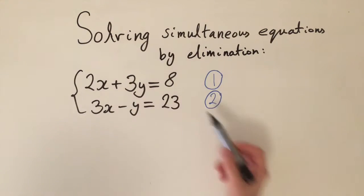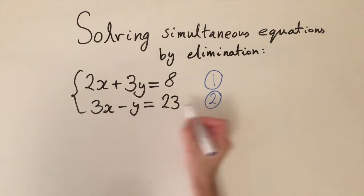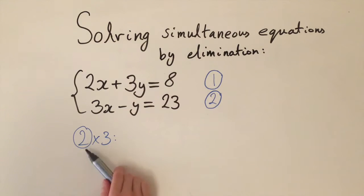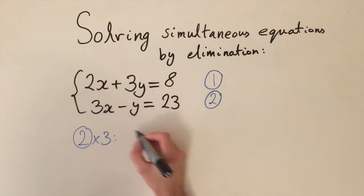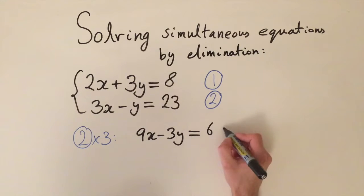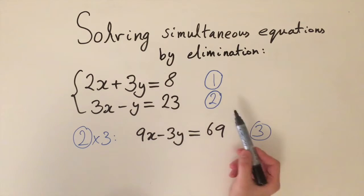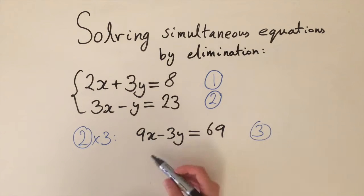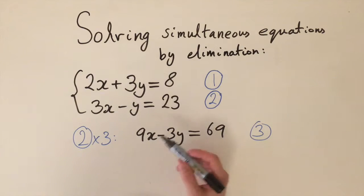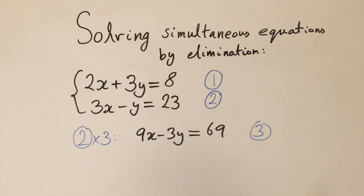We want to get two terms of a variable in both equations. So we're going to take the second equation and multiply it by three. Three times 3x is 9x, three times negative y is negative 3y, and three times 23 is 69. We'll label this equation three. This equation has identical solutions to equation two — we've just multiplied both sides by the same number. Now equations one and three both have a term involving 3y.